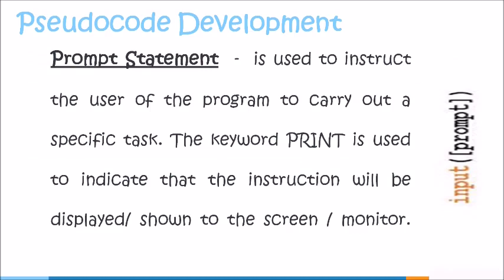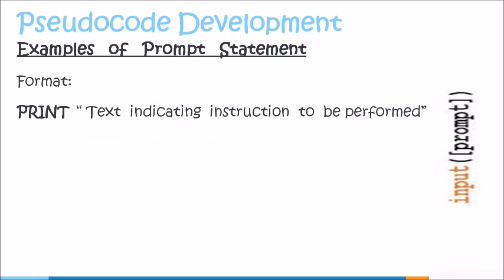A prompt statement is used to instruct the user of the program to carry out a specific task. Keyword print is used to indicate that the instruction will be displayed or shown to the screen or to your monitor. The format of a prompt statement shows that the keyword print is used as well as the instructions being given to the user. These instructions are enclosed in double quotation marks, and it is important that these instructions are as clear as possible once given to the user.